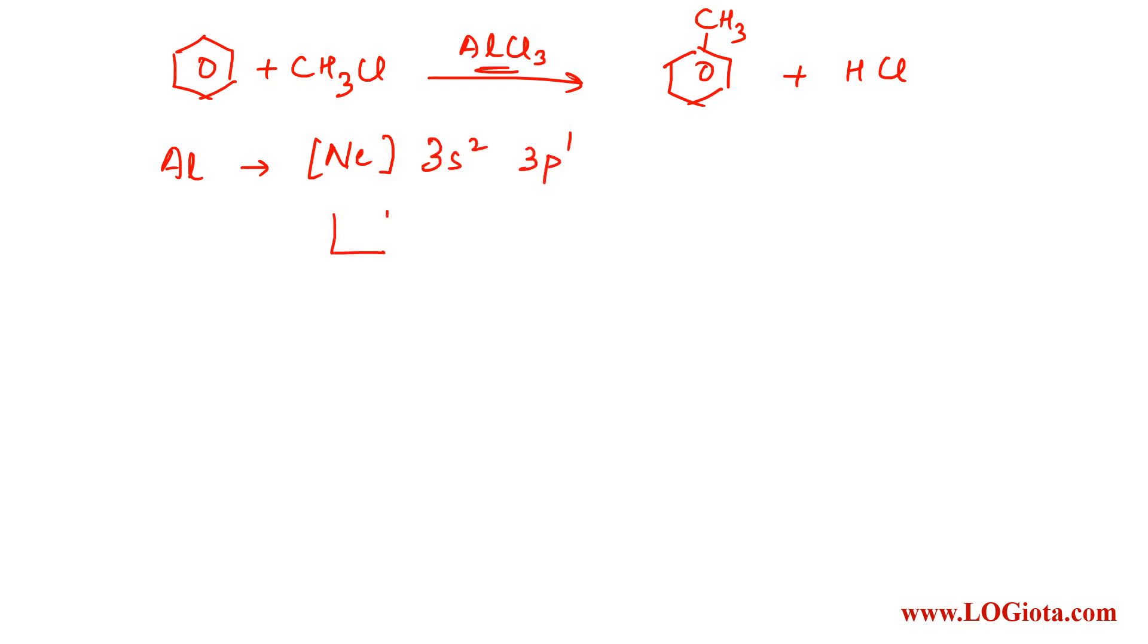In the form of orbitals, we can write this as 3s² and 3p¹. In formation of AlCl3, first we draw the degenerate orbitals of aluminum, which become 3s¹ 3p². One electron from the s orbital moves to the p orbital.